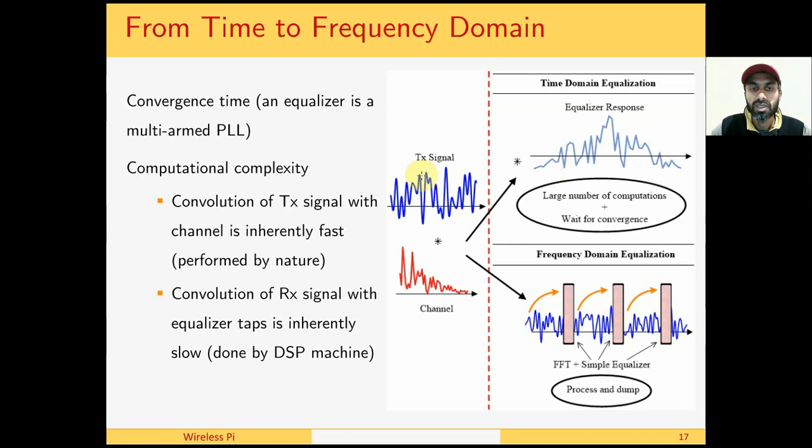The problem here is that the convolution of the transmit signal with the channel is inherently fast because it is performed by nature. On the other hand, the convolution of the equalizer impulse response with the match filter output is performed by our DSP machine and is inherently slow as compared to the natural process.